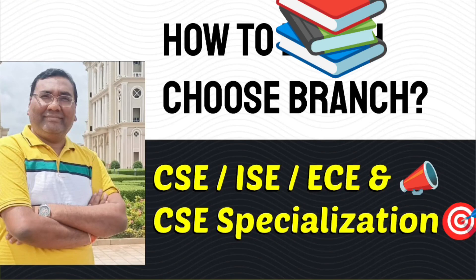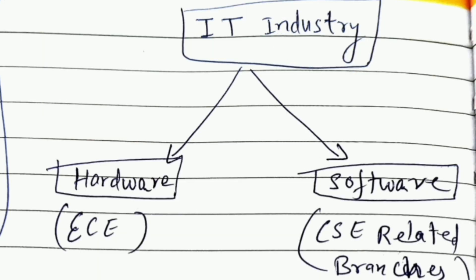Hello friends, good morning, good afternoon, good evening. I get a lot of questions about choosing the branch — which specialization, EC or CSC, or even from the core side. This video I'm trying to explain the difference between different branches and how you can decide which one is suitable for you. This is based on my experience — I've done my engineering from one of the top NITs in India and my MBA from a top 25 MBA college. I work in the IT industry with around 22 years of experience, and I've also done 140-plus engineering college reviews in Karnataka.